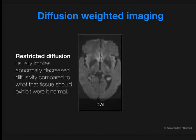The terminology most commonly used is whether or not a mass or a region of the brain demonstrates restricted diffusion, which actually implies whether there's abnormally decreased diffusivity. In other words, water molecules are having a greater degree of difficulty diffusing long distances compared to what that tissue should exhibit were it normal.